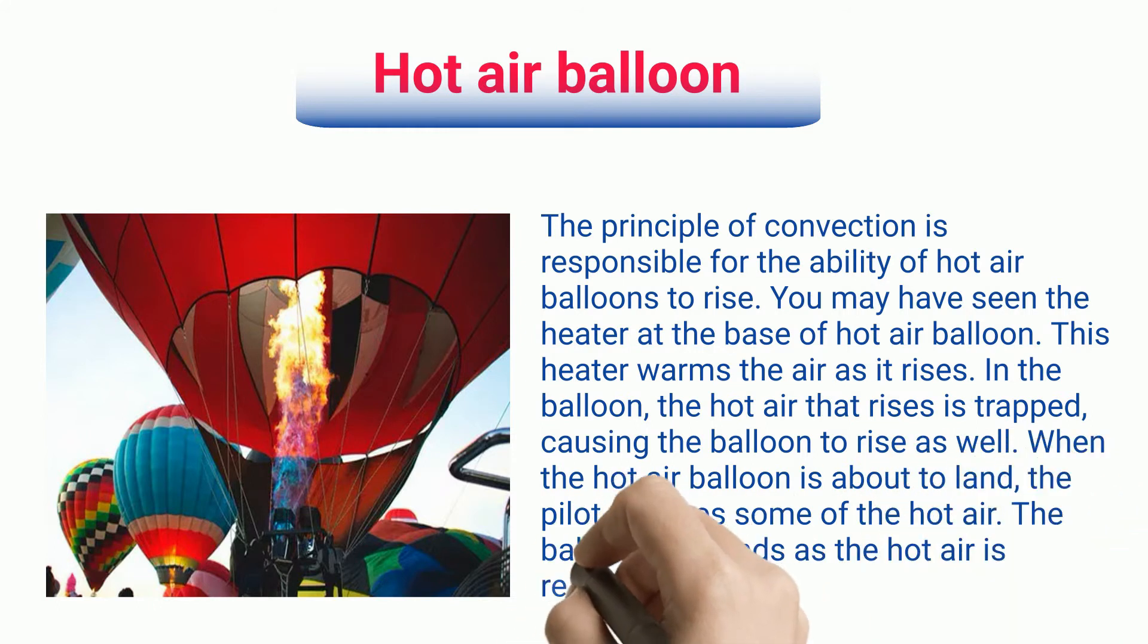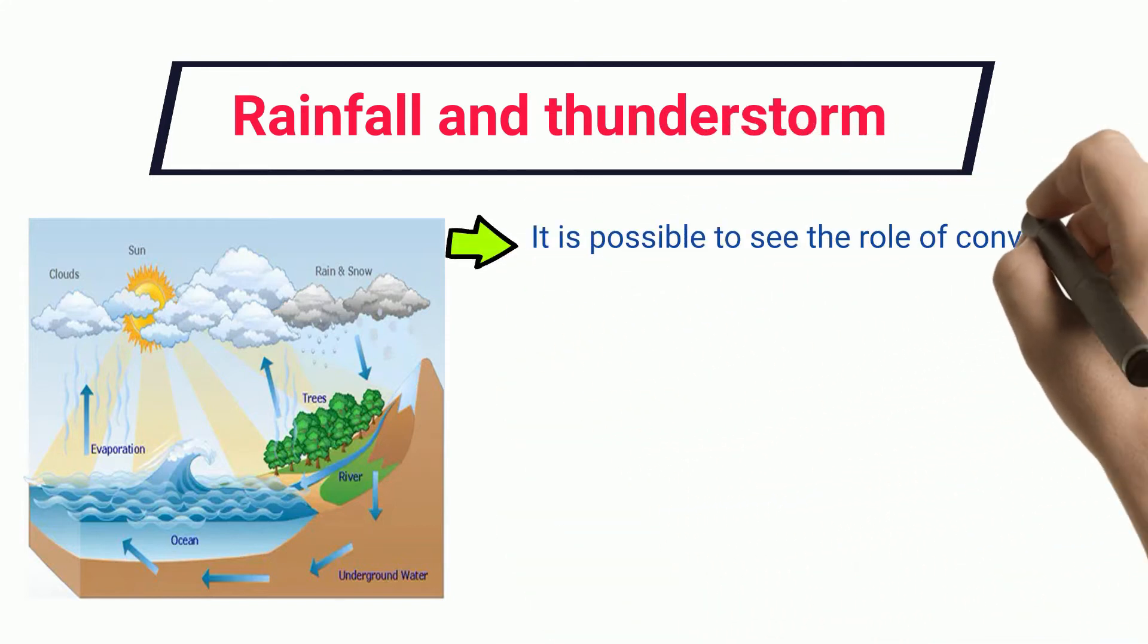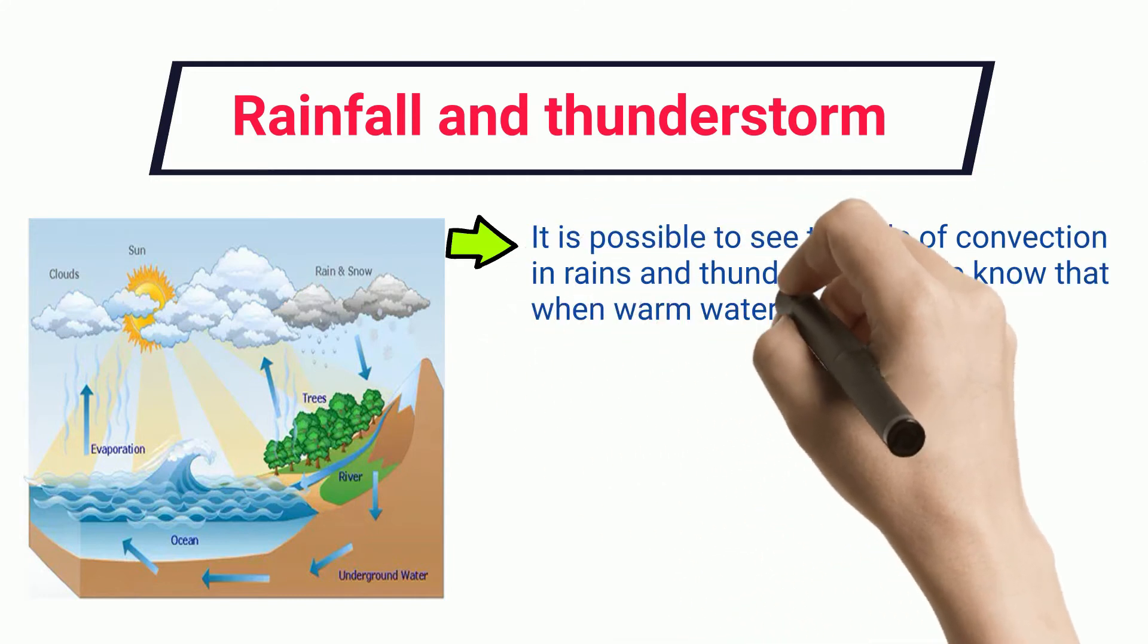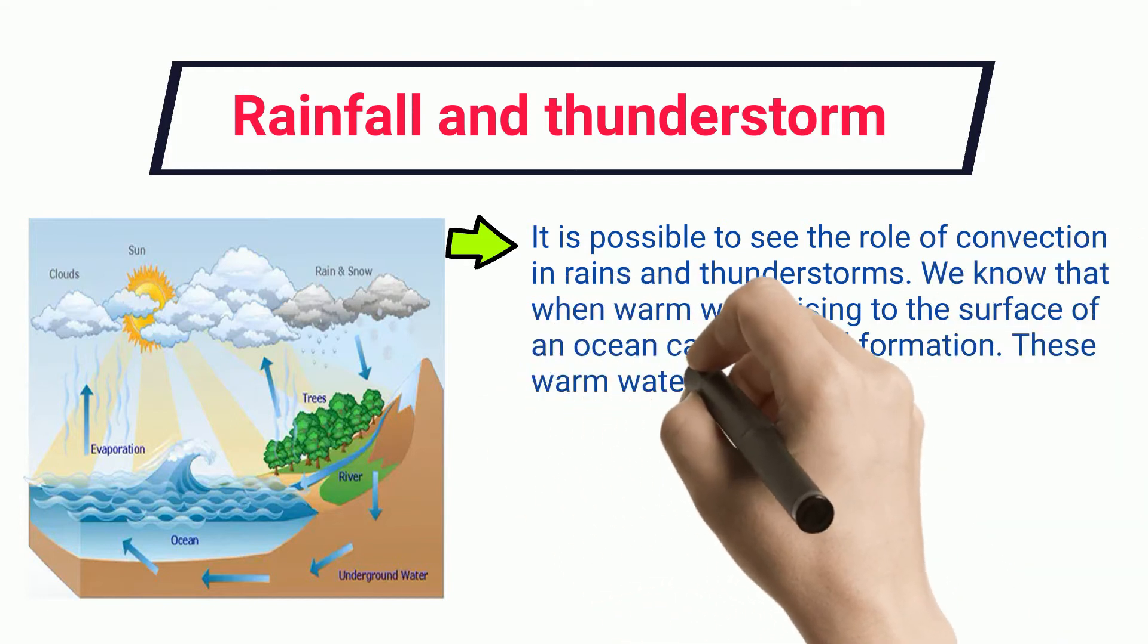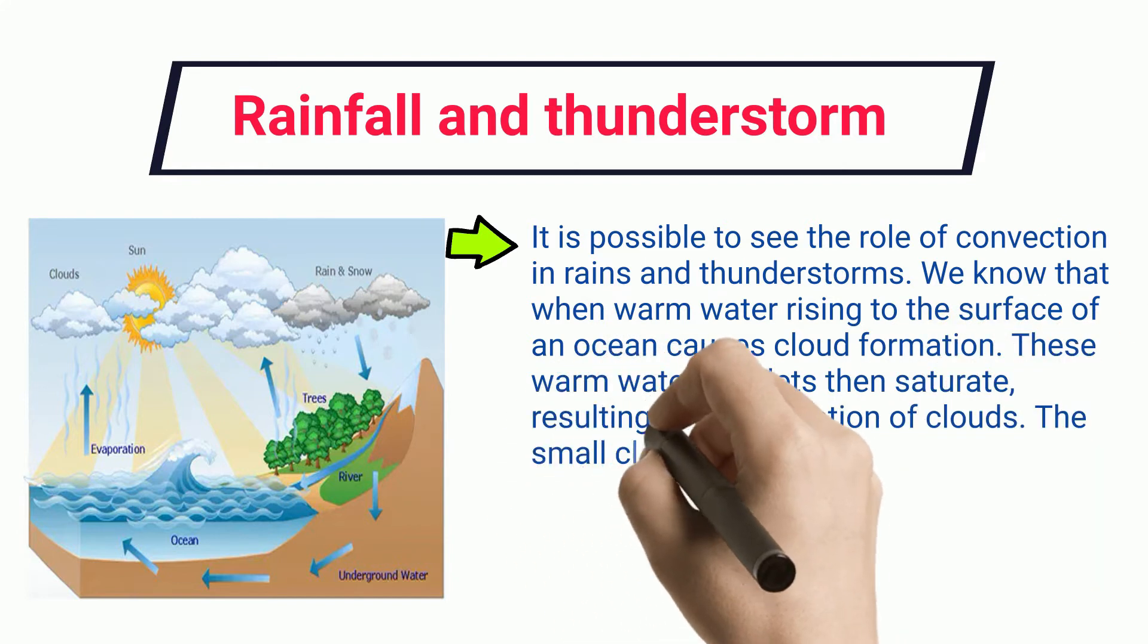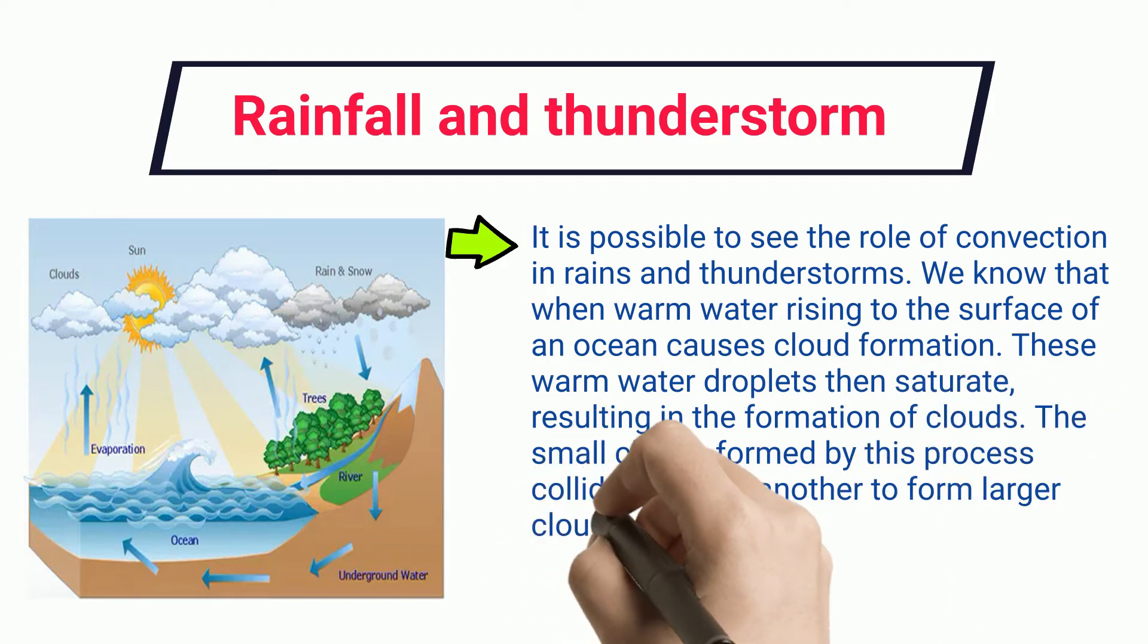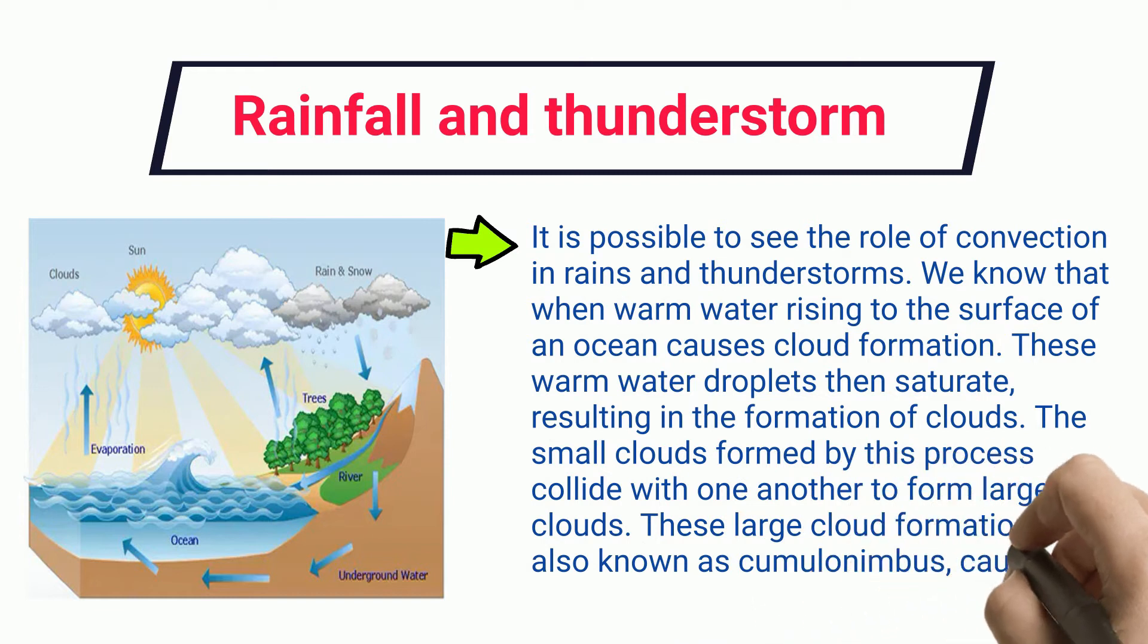Rainfall and thunderstorm: It is possible to see the role of convection in rains and thunderstorms. When warm water rises to the surface of an ocean, it causes cloud formation. These warm water droplets then saturate, resulting in cloud formation. The small clouds formed by this process collide with one another to form larger clouds. These large cloud formations, also known as cumulonimbus, cause rain and thunderstorms.